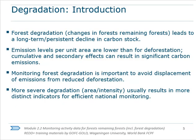Forest degradation results from activities that cause a persistent decline in carbon stocks, yet do not cause enough damage to change land use classification from forest to non-forest. While emissions from forest degradation may generally be lower in intensity than those from deforestation, in aggregate, forest degradation activities have been shown to have a significant emissions impact. So it's important to include relevant degradation activities within REDD programs to ensure complete reporting.